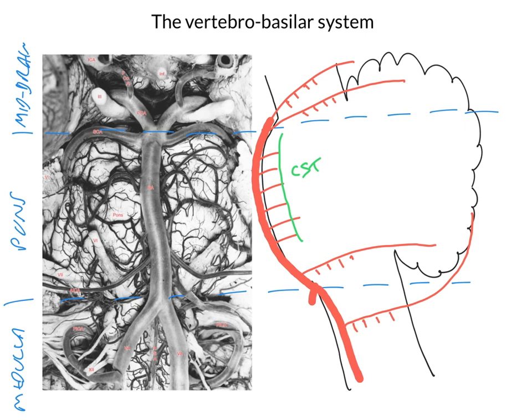Furthermore, the anterior medulla is also supplied by little branches coming off the vertebral arteries themselves. Really, it's not that difficult — all you've got to do is look at this diagram and realise that if an artery runs over or courses over a particular part of the brain, then it supplies it with blood. That's the basic rule to follow and it really is no more complicated than that.